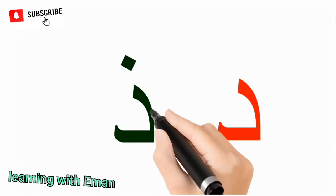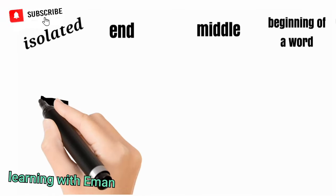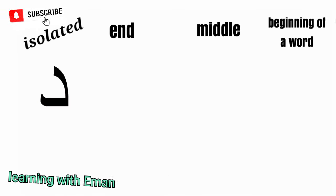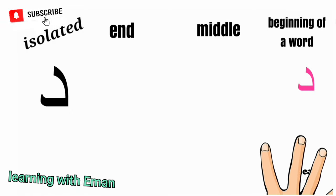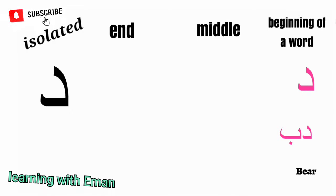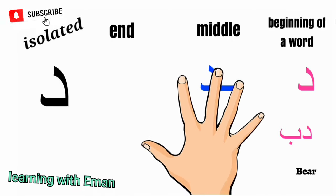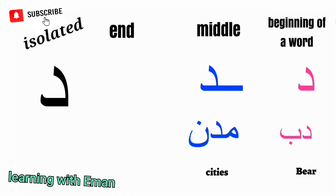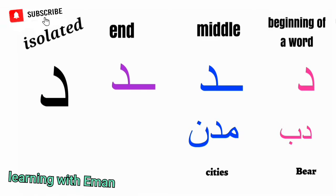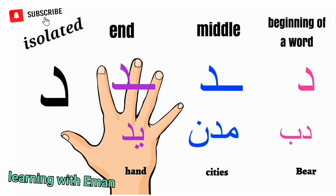The next letters of the Arabic alphabet are Dal and Dhal. Notice that these two letters do not connect to the following letter. Dal sounds like the letter D in English but softer. At the beginning of a word, like in a word meaning pair. At the middle of a word, like in a word meaning cities. At the end of a word, like in a word meaning hand.